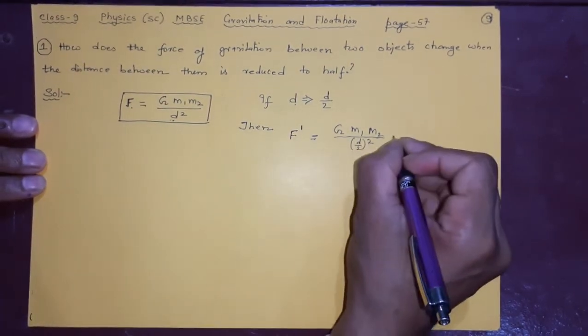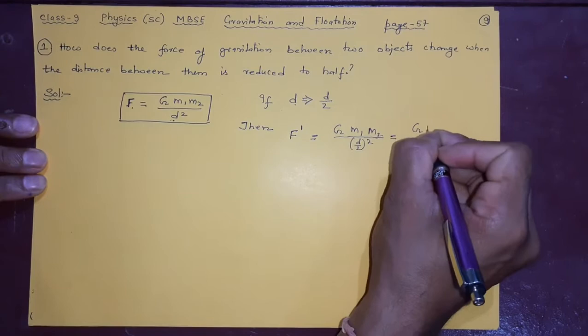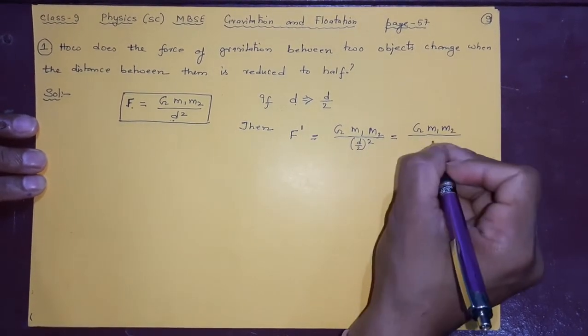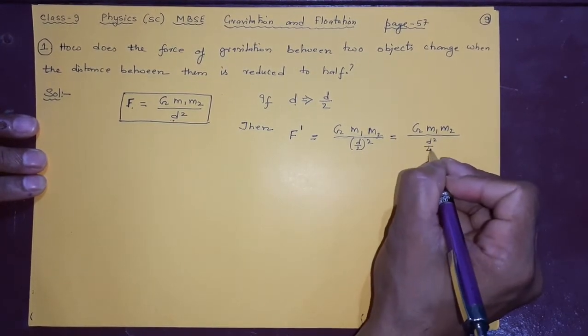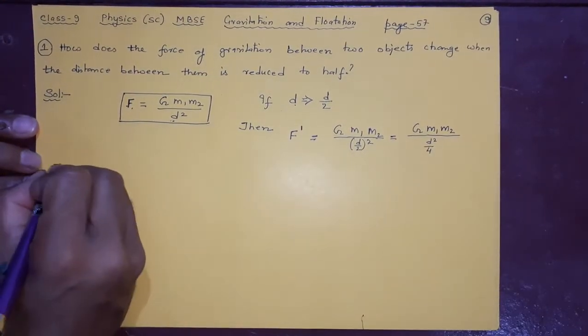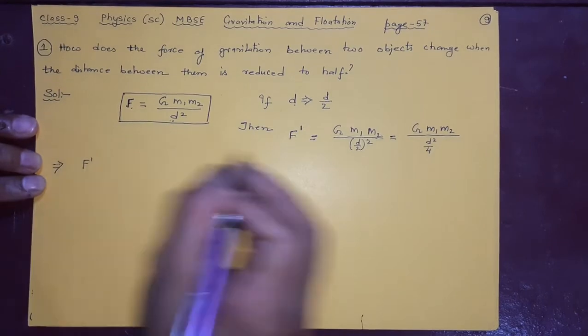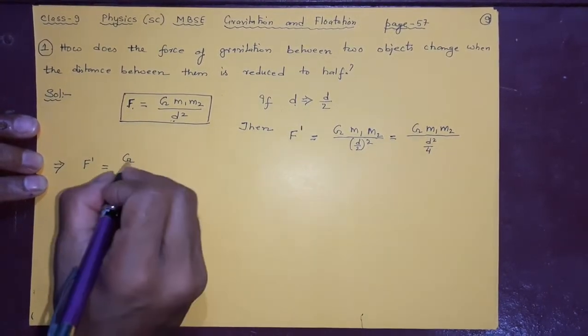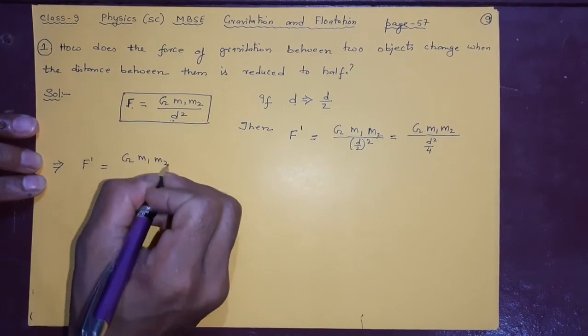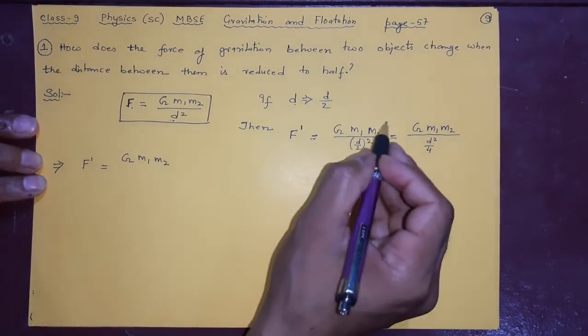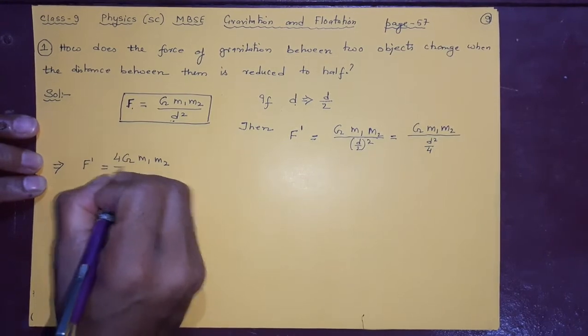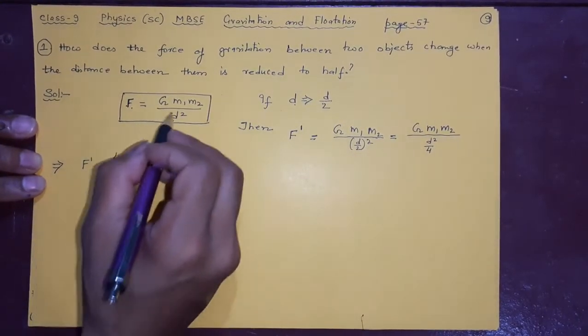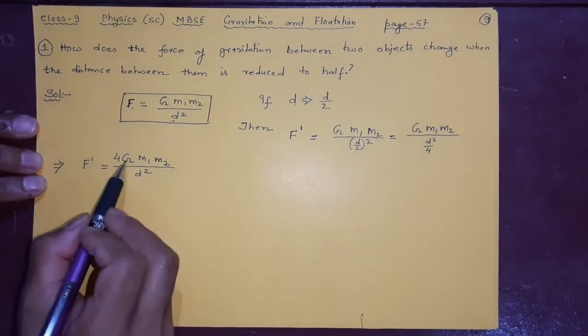F dash, next step, equal to G as it is, G*m1*m2, right? And this 4 will go here up, and here you will remain d square. Now you compare these two. There is some similarity: G, m1, m2, d square. Up to here it is F.